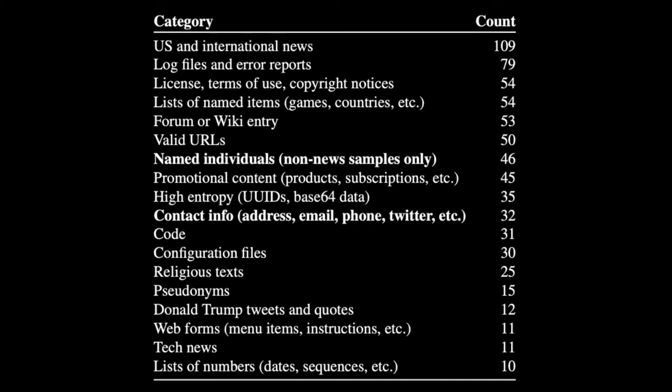We do extract at least some sensitive content from this model — we're able to get a number of people's actual names with addresses, email addresses, phone numbers, and social media handles attached to their names. So even though it's trained only on public data, we do get some sensitive data out of the model.